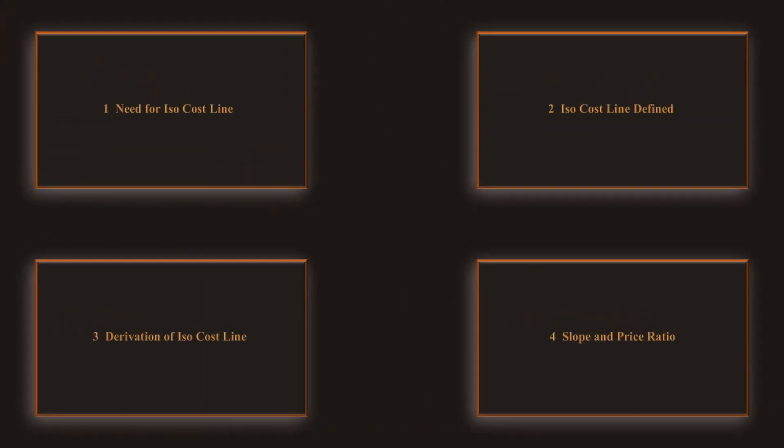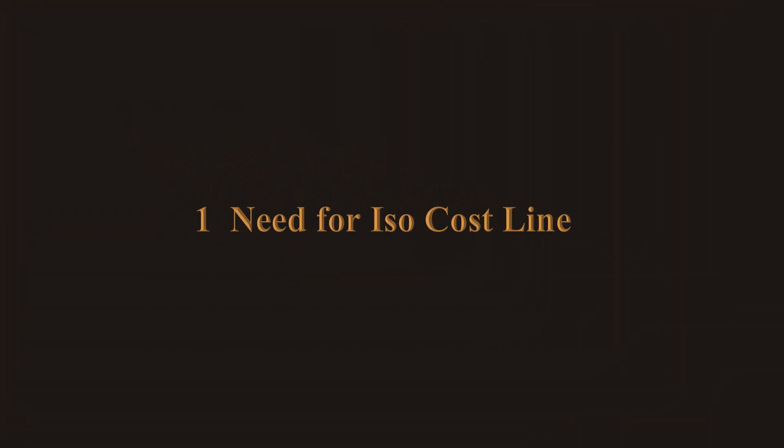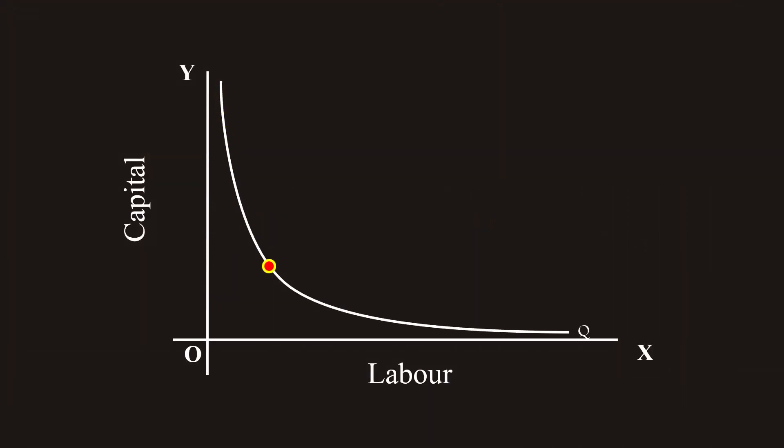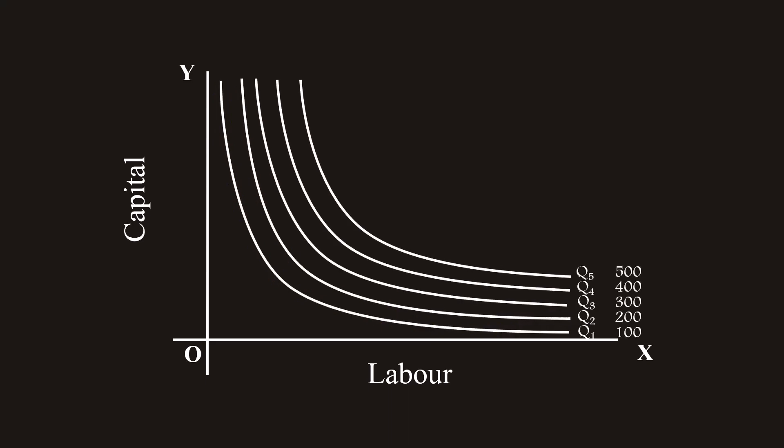1. Need for isocost line. In an isoquant curve there are so many combinations of two factors, labor and capital, capable of producing the same level of output. Each isoquant in an isoquant map represents a specific level of output.